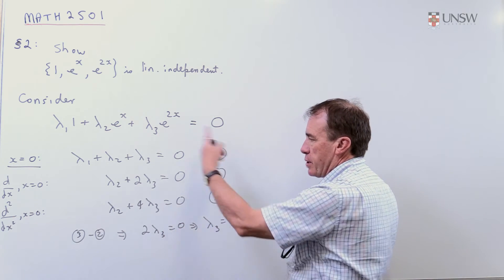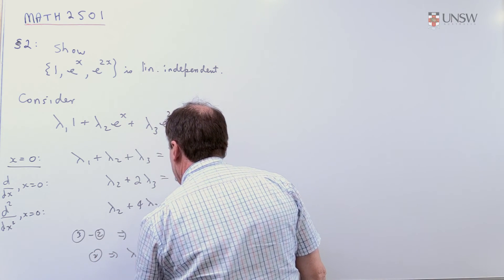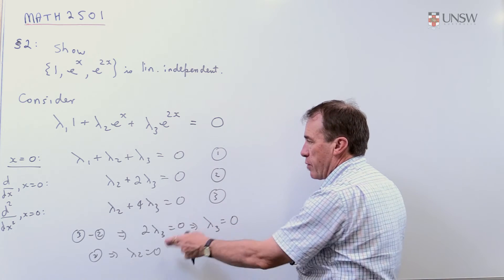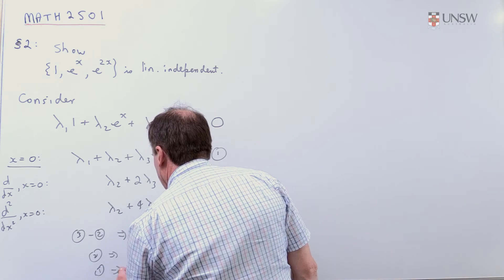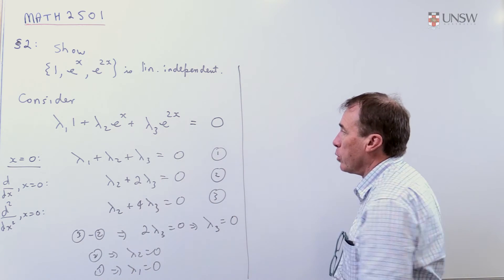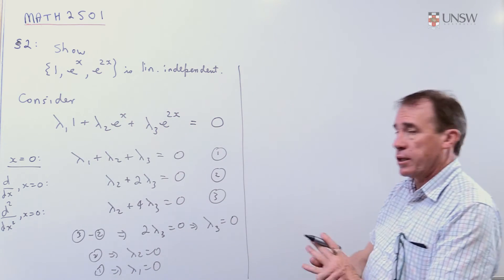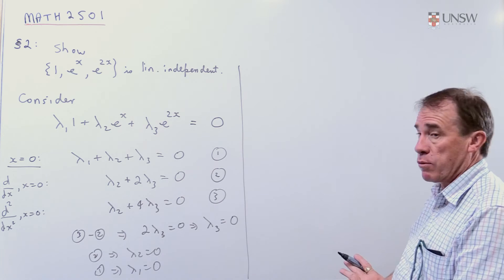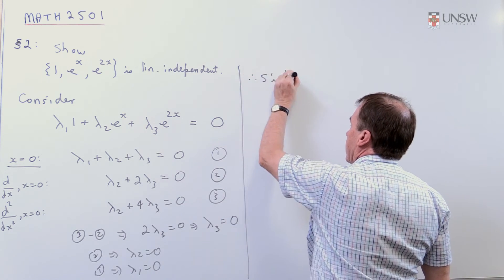If lambda_3 is zero, you can plug it back into equation 2. Now it tells me that lambda_2 is zero. I can plug both of those back into equation 1, and that will give me that lambda_1 is zero. And so I try and build the zero function from these three. My calculation here tells me the only way of doing that is they're all at the scalars of zero, so therefore S is linearly independent.